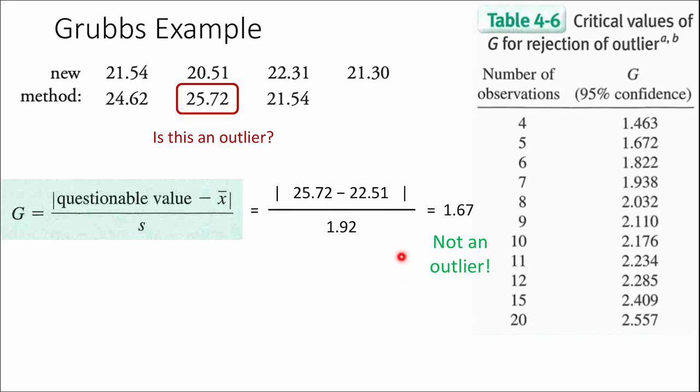Here's an example. In this set of data from a previous problem, is this number an outlier? You compute the average and standard deviation including the questionable point, put the questionable value in the formula, and calculate your G. The number of observations goes in the table — not degrees of freedom, which is frustratingly annoying. There are seven values here, so the G number needs to be greater than 1.938 to throw out the data point. Our value is 1.67, so you keep the data point in — there's a 95% chance this data point might actually be part of your measurement. That said, if you know you spilled some of it, you have a really good reason for throwing out the data point. The statistical test assumes you did everything correctly — the statistics are for random errors, not 'oh, I messed that up.'